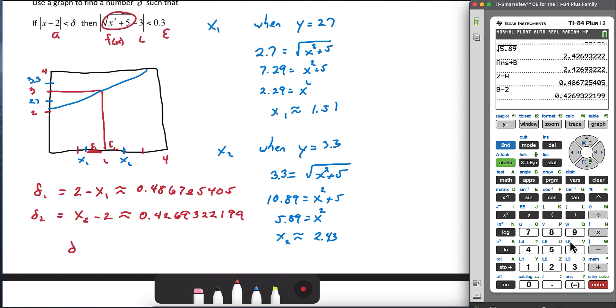And remember, delta is the smaller of those two numbers. And it looks like delta 2 is the smaller. So 0.426932. And let's stop there. We'll round to six decimals. Be sure to read directions on any assignment to know where to round.